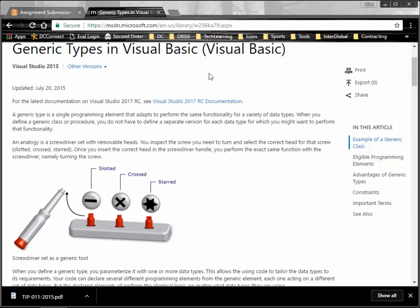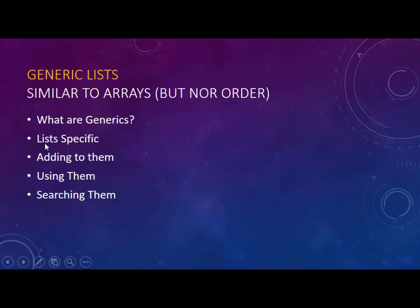There are all kinds of different classes of generics, and the one we're going to look at today is specifically lists. A list is very similar to an array, with the difference of not having a fixed order. There's no predefined sorting — you can sort it, change it, and rearrange the items in the list. We're going to show you how to add items to a list, how to use the list, and how to search through a list to find a specific item.